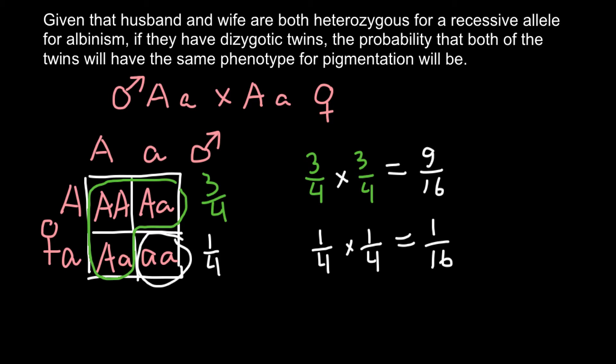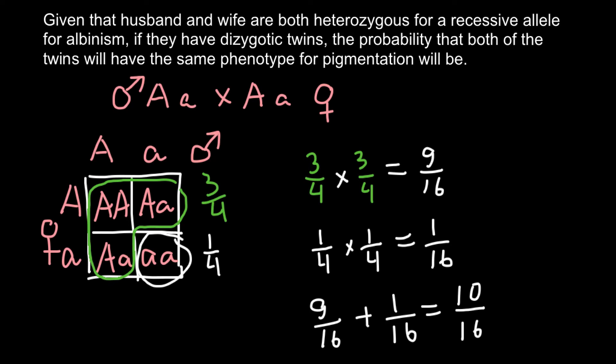Two variants are possible, and since they cannot happen simultaneously — the couple may have either two children with normal phenotype or two that are albino — we use the additive rule. We add 9/16 plus 1/16, and the probability that this couple would have two children of the same phenotype is 10/16, which reduces to 5/8. That is our answer.